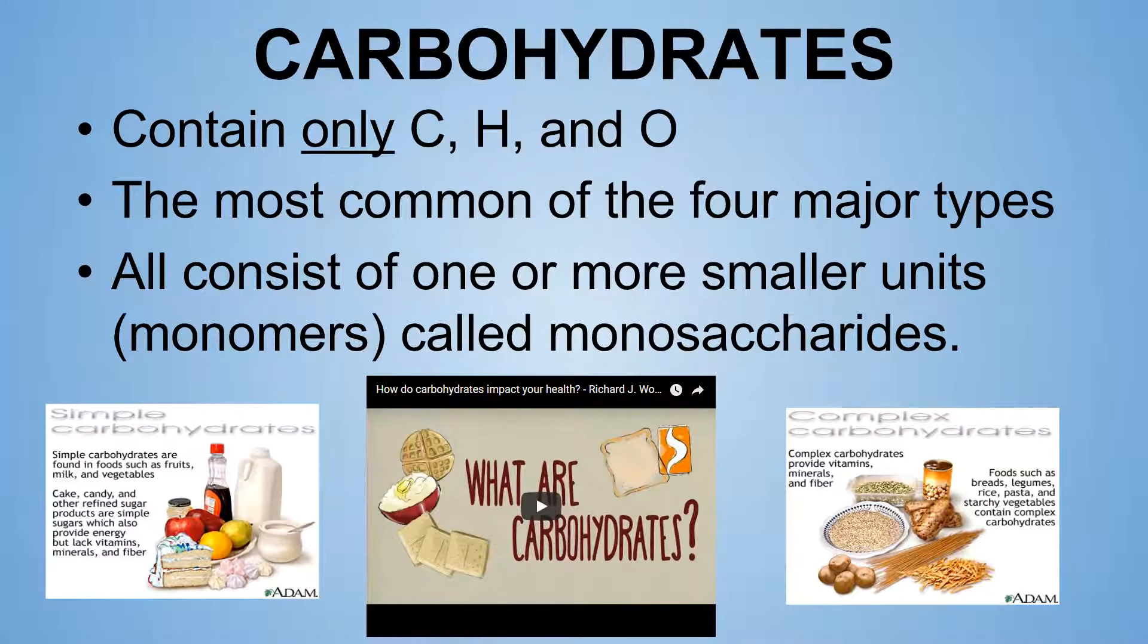Let's first take a look at carbohydrates. Carbohydrates are made of only carbon, hydrogen, and oxygen. It is the most common that you're going to find. This is made of a monomer. As we've talked about before, a monomer is a building block. It's made of a monomer called a monosaccharide.